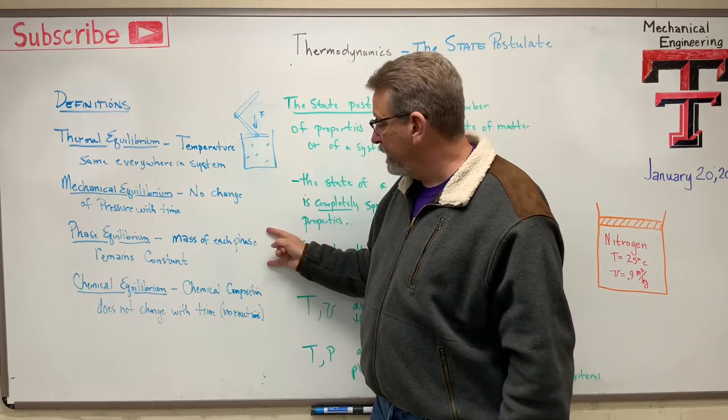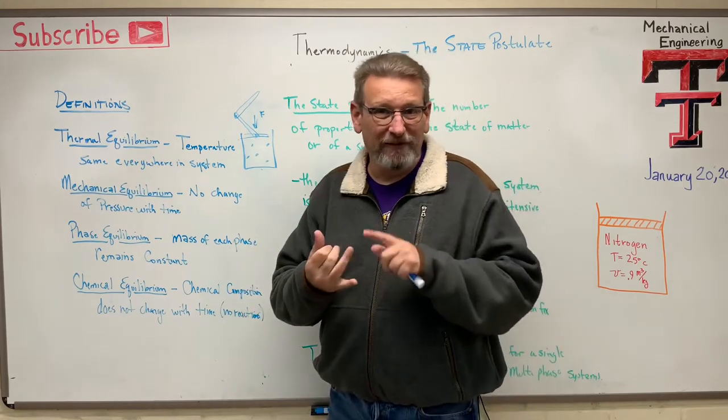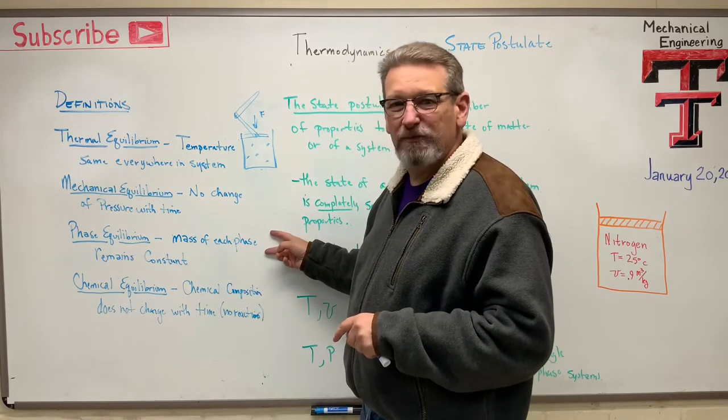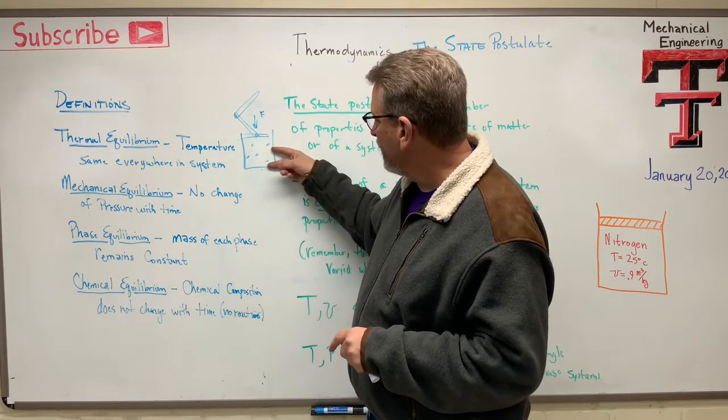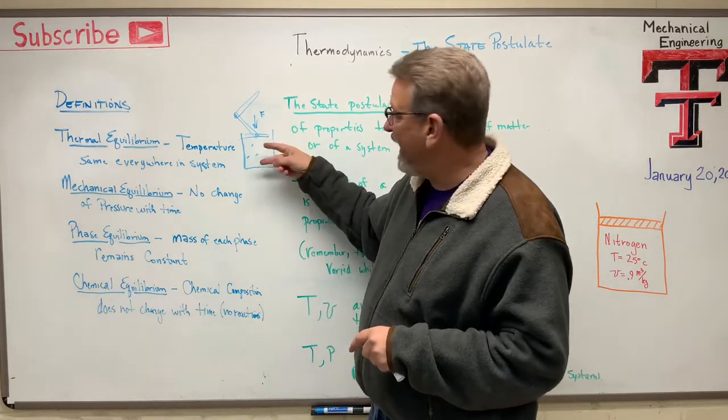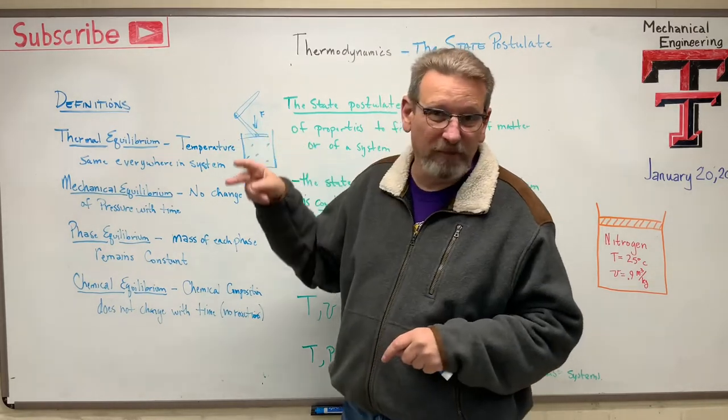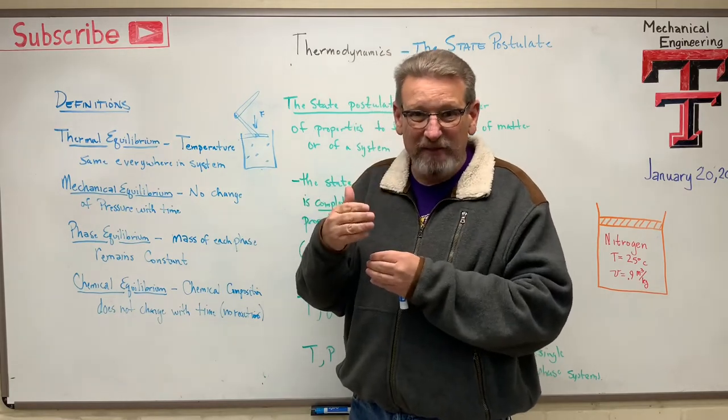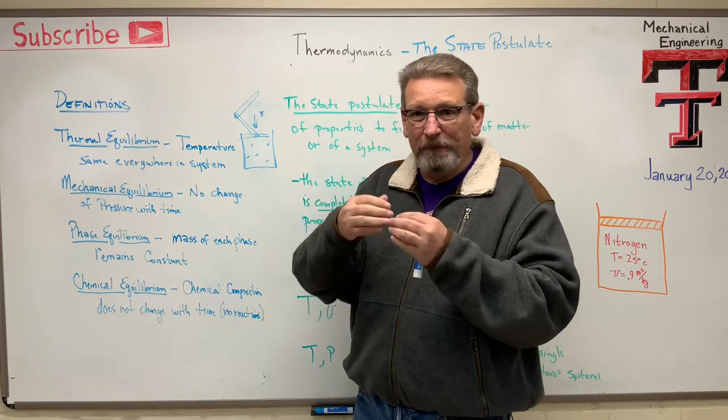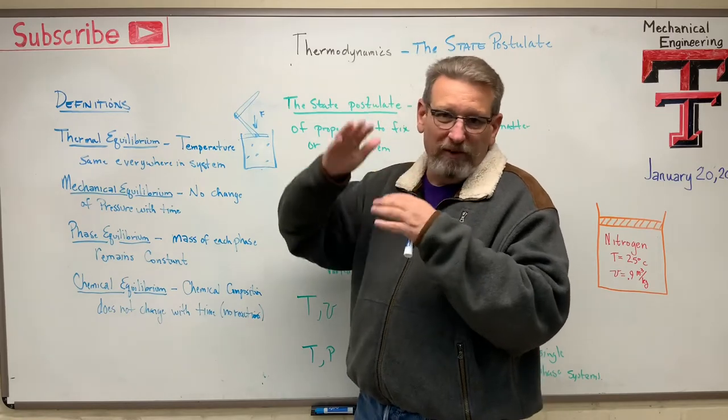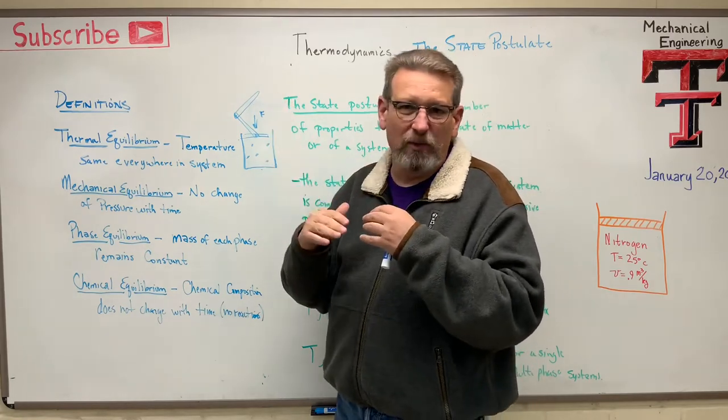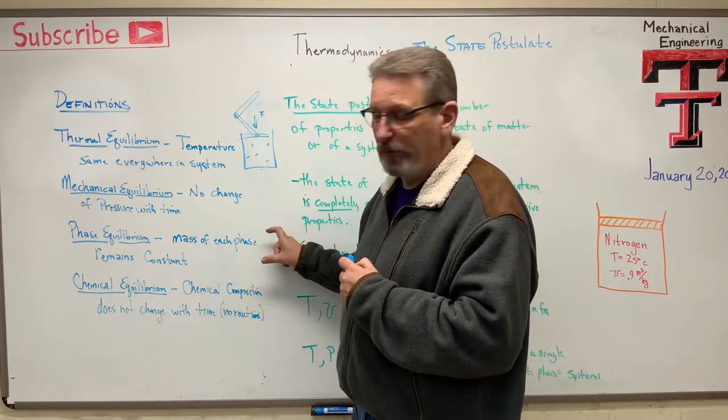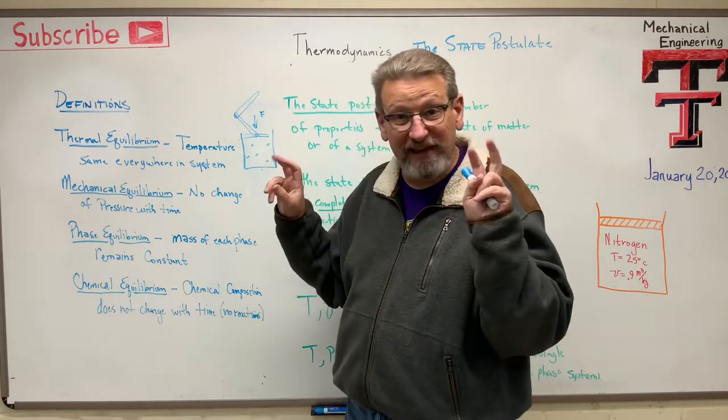Phase equilibrium. Remember your phases: solids, liquids, gases. The mass of each phase must remain constant. So if you had a liquid like water in the bottom and then a gas over the top of that, maybe just air or something, then those have to be constant. There can't be any chemical reactions where they're changing phases, or one's going to the other, a solid's going to a liquid or vice versa. So you have a phase equilibrium when we talk about state of equilibrium.